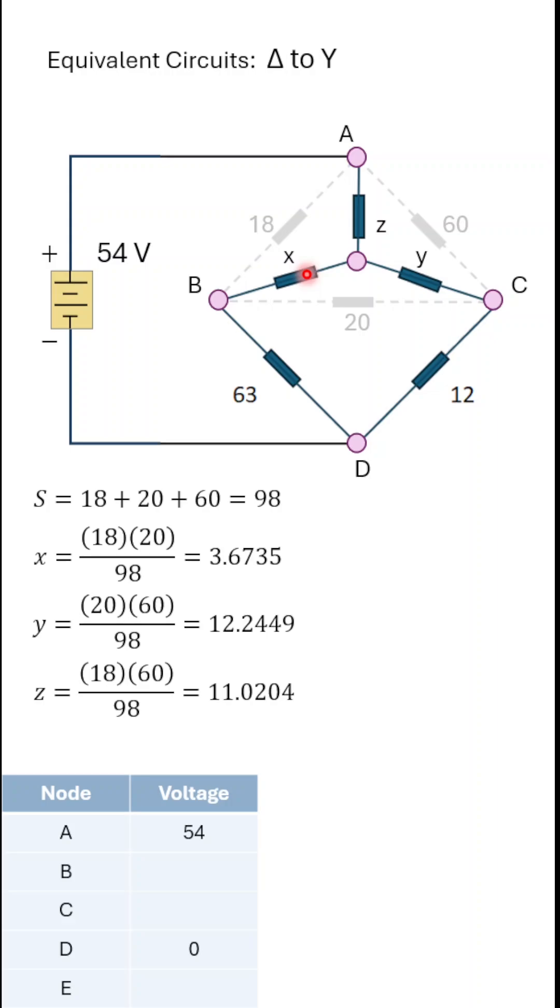For each one, for example X, it's the product of adjacent values 18 and 20, so 18 times 20 over that sum of 98. So we have these values.